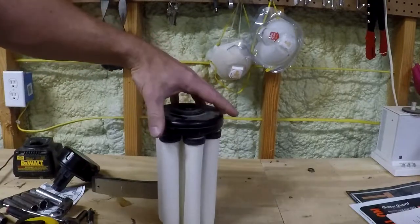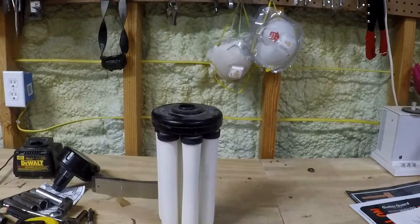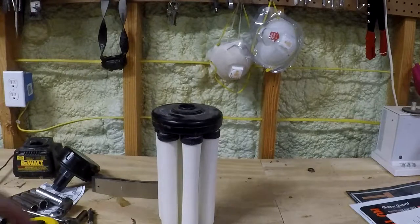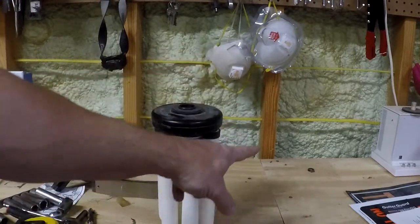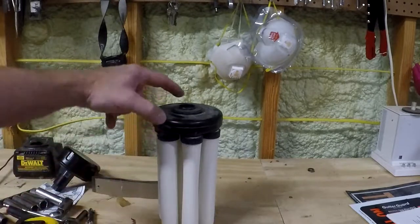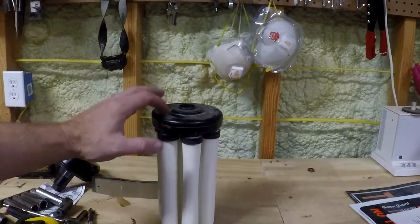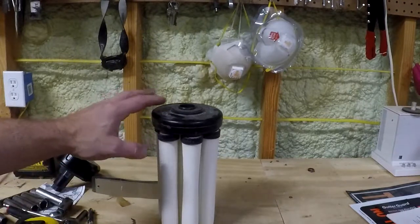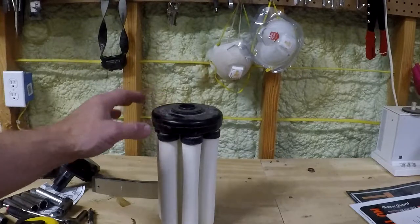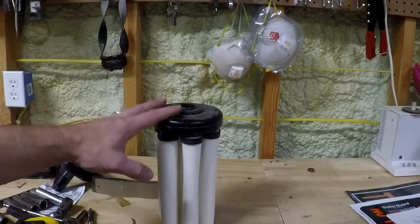It goes into that big blue water housing just like that. The water comes in the outside, goes through the ceramic in the middle and comes out the middle here and goes out to your house. But these are very popular overseas and Amazon sells them. And like I said, they work really well.